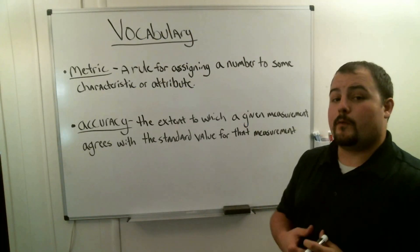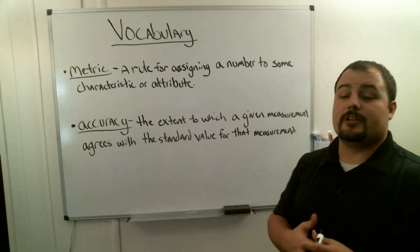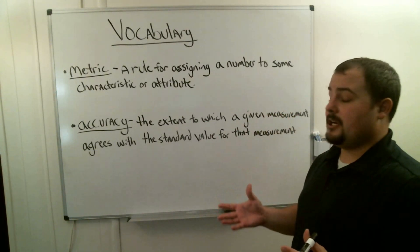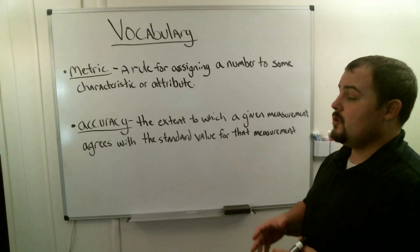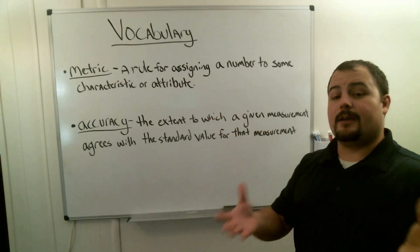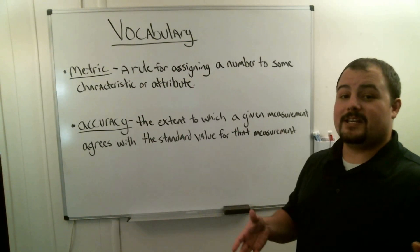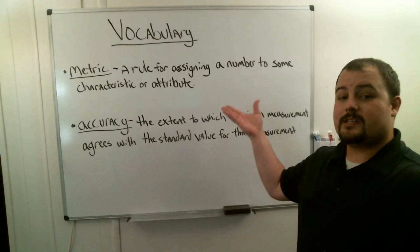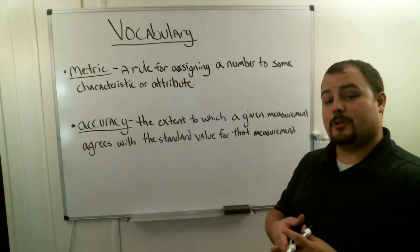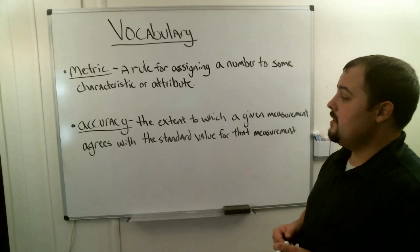We have two vocab words for today's lesson. The first vocab word is metric. A metric is a rule for assigning a number to some characteristic or attribute. One example might be batting average when looking at baseball, or free throw percentages in basketball — we assign a number to that attribute of how many free throws someone makes.